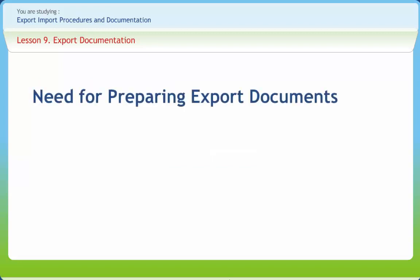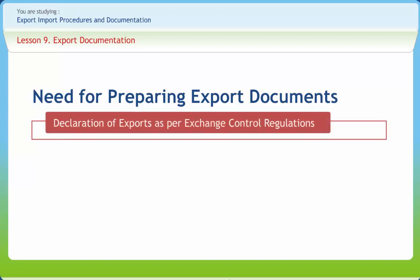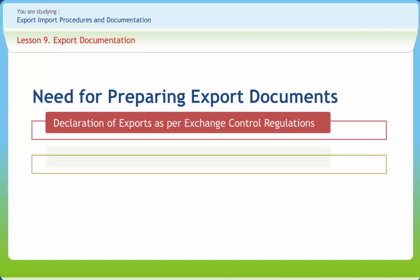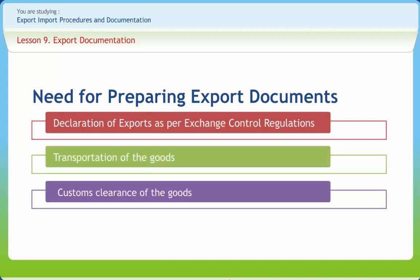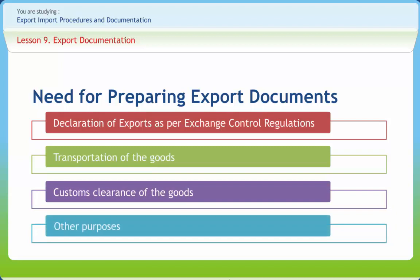Export documents have to be prepared for various purposes like declaration of exports as per exchange control regulations of the country, transportation of goods, custom clearance of goods, and other purposes. Export declaration forms have utmost importance and are binding on the exporter. It is therefore necessary that enough care is taken while declaring exports on these forms.